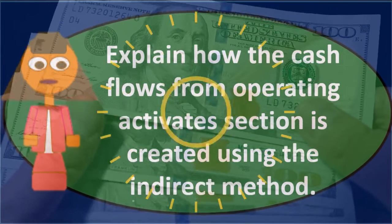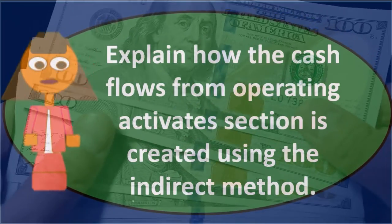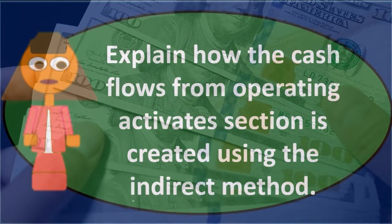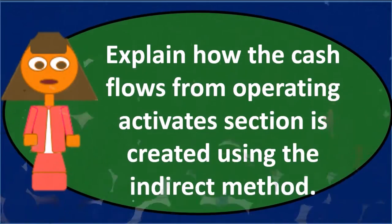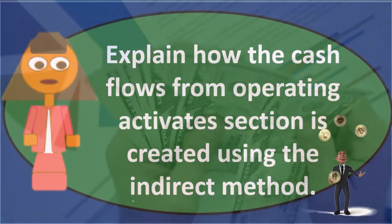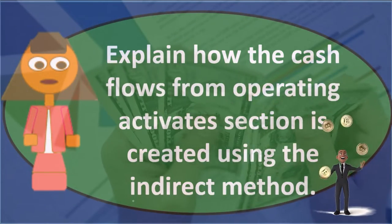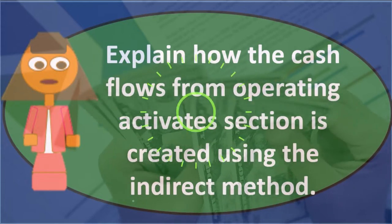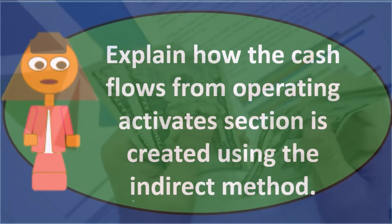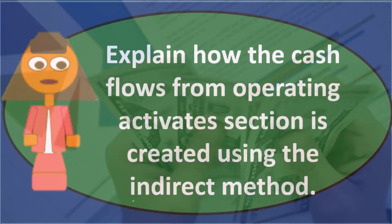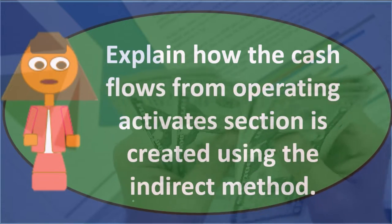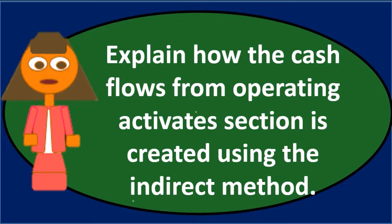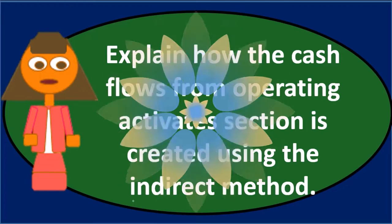We should have an idea of what the indirect method is. The statement of cash flows is one of our major financial statements — we have the balance sheet, income statement, statement of equity, and statement of cash flows. The statement of cash flows reports cash flows that happened over time, the change in cash, broken out into three major categories.